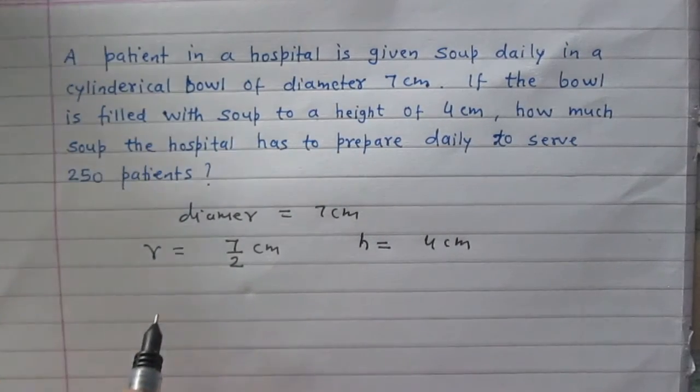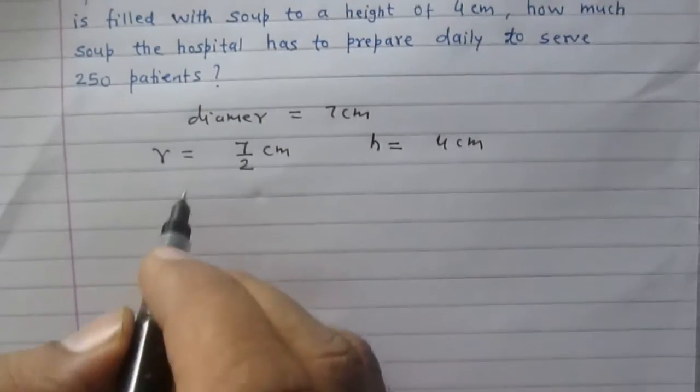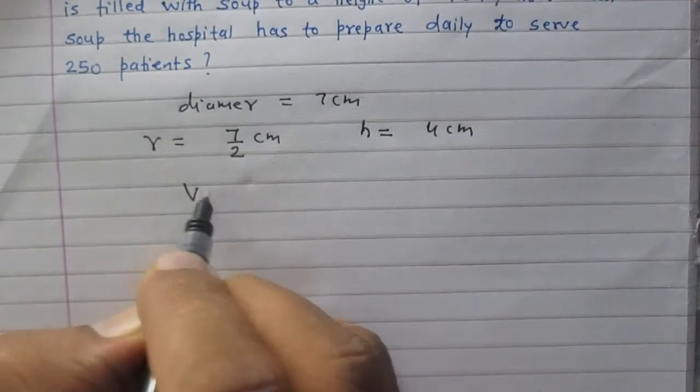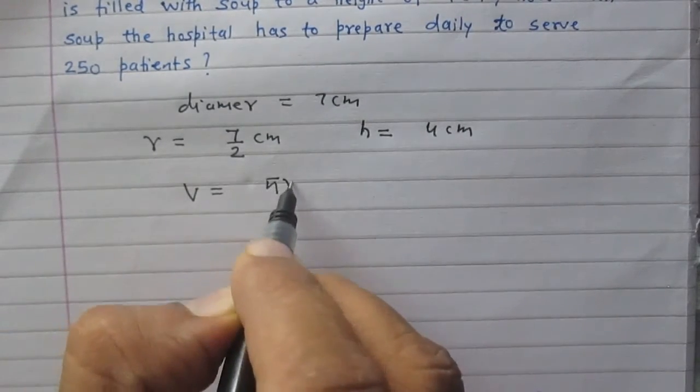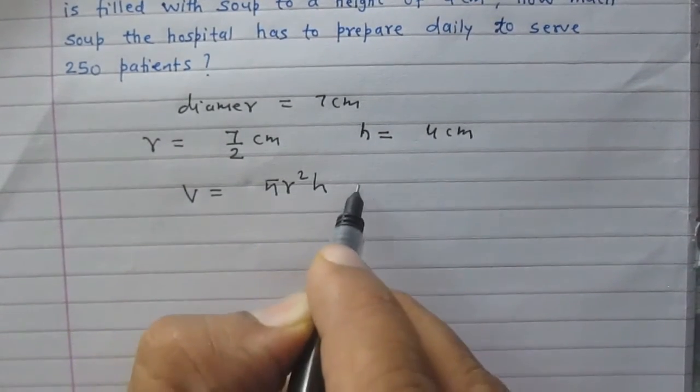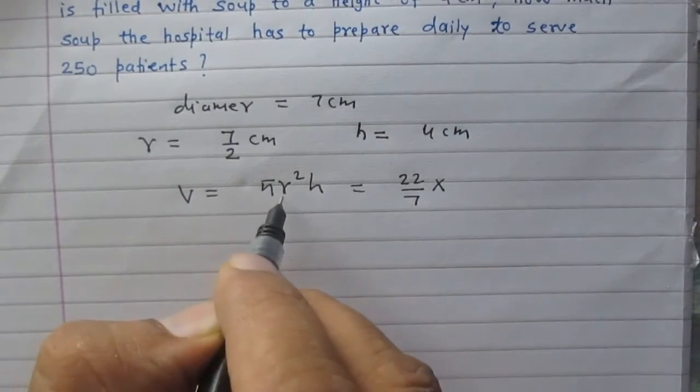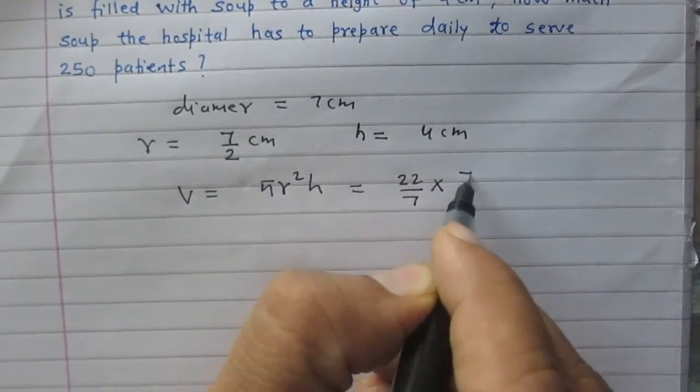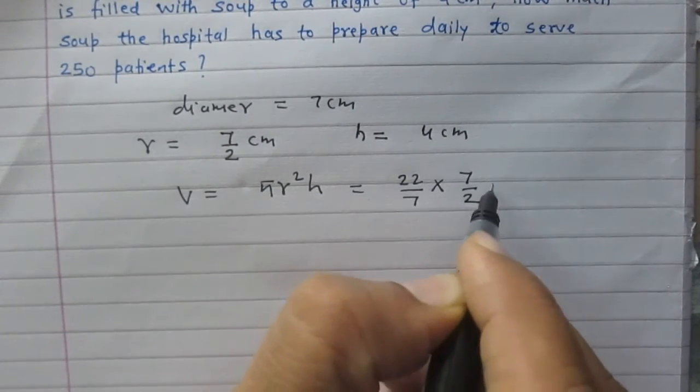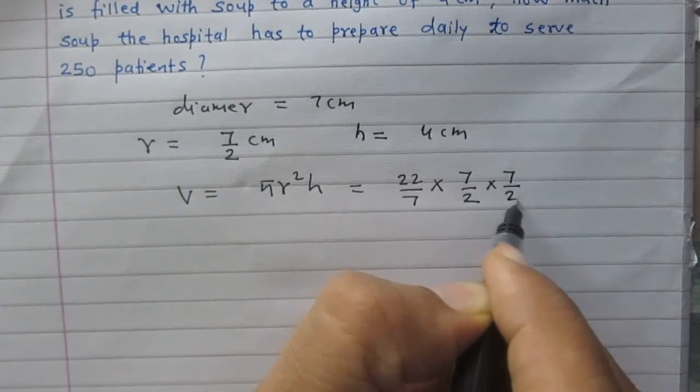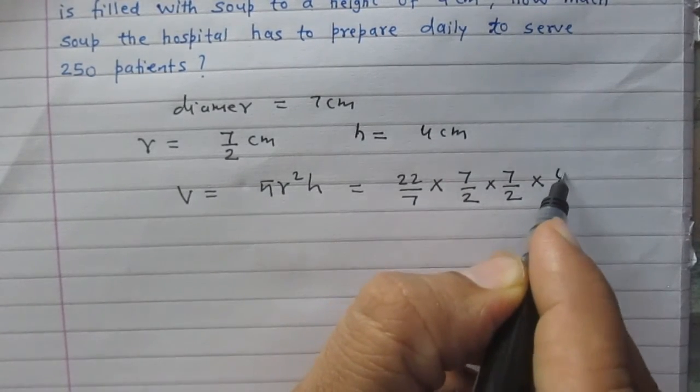We can find the volume of soup in one bowl. In a single bowl, it is pi r squared h. It is 22 by 7, radius squared. R stands for the radius, so it is 7 by 2. R squared is 7 by 2 multiplied by 7 by 2, and h is 4 cm.